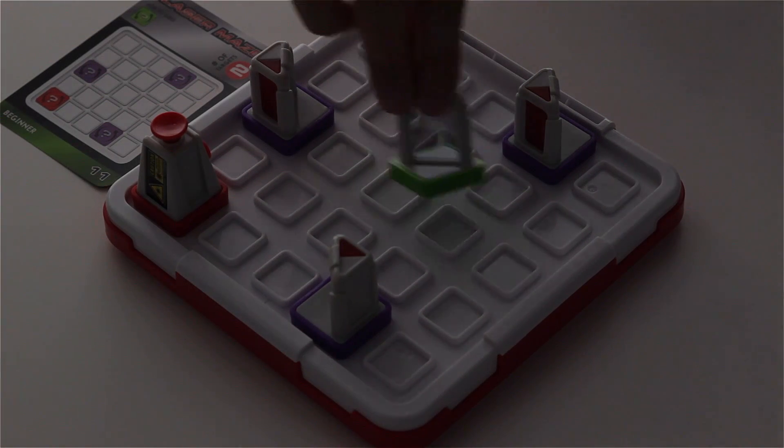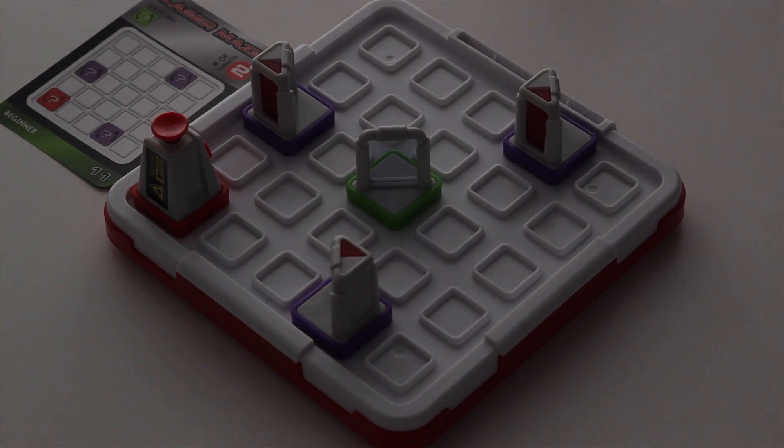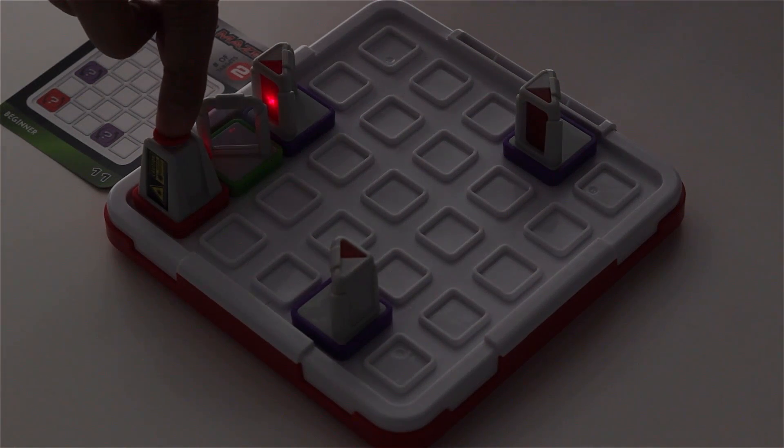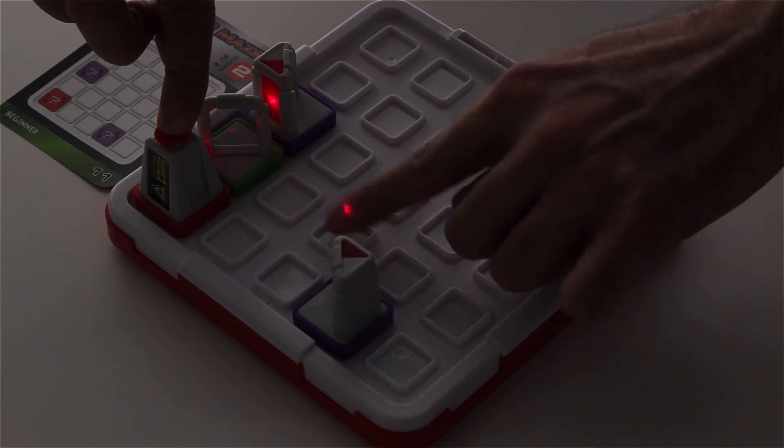And we also know that a green piece will be added somewhere to the board. Now the green pieces are unique because they act like mirrors but they're also transparent. So the laser will go through it and bounce a reflection off at 90 degrees.